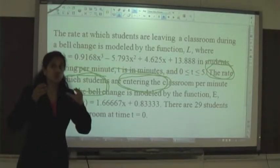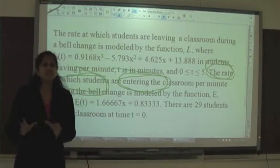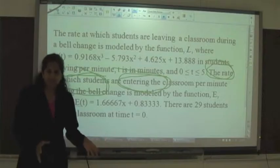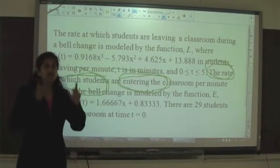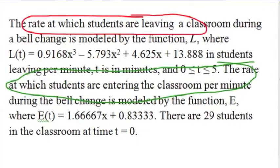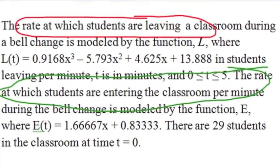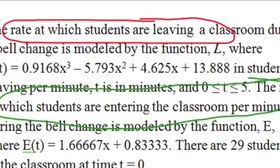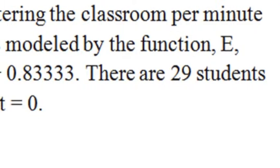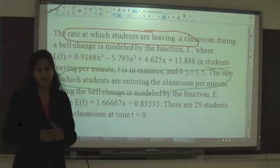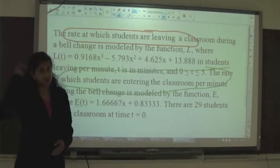E of T represents the rate of people entering the classroom — not the number of people in the classroom, just the rate of people entering. So we use what's called a closed reading strategy, using different colors, going in and circling what these equations represent. As it says below, there are 29 students in the classroom at the beginning of the period, really at the end when the bell is about to ring.